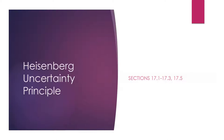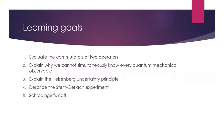The learning goals for today are going to be to evaluate the commutators of two operators. We'll see that this is the tool by which we can determine if we can know two observables simultaneously. Then we're going to get to the actual Heisenberg uncertainty principle. We'll look at a physical example, the Stern-Gerlach experiment, and then we'll mention Schrödinger's cat at the end as a thought experiment that demonstrates the weirdness of all of this.